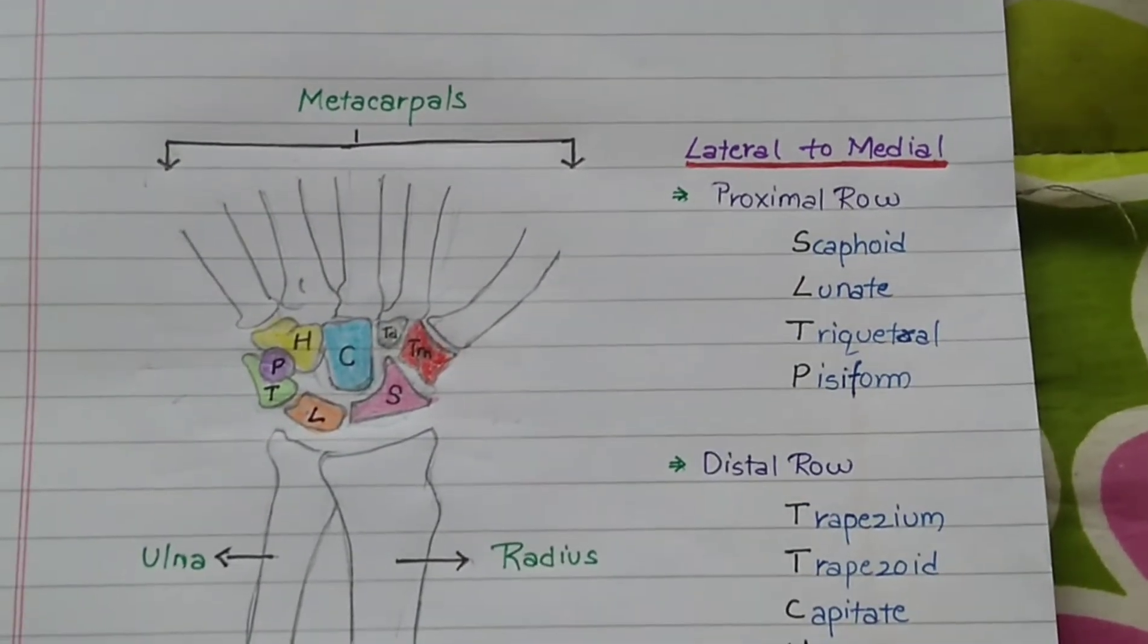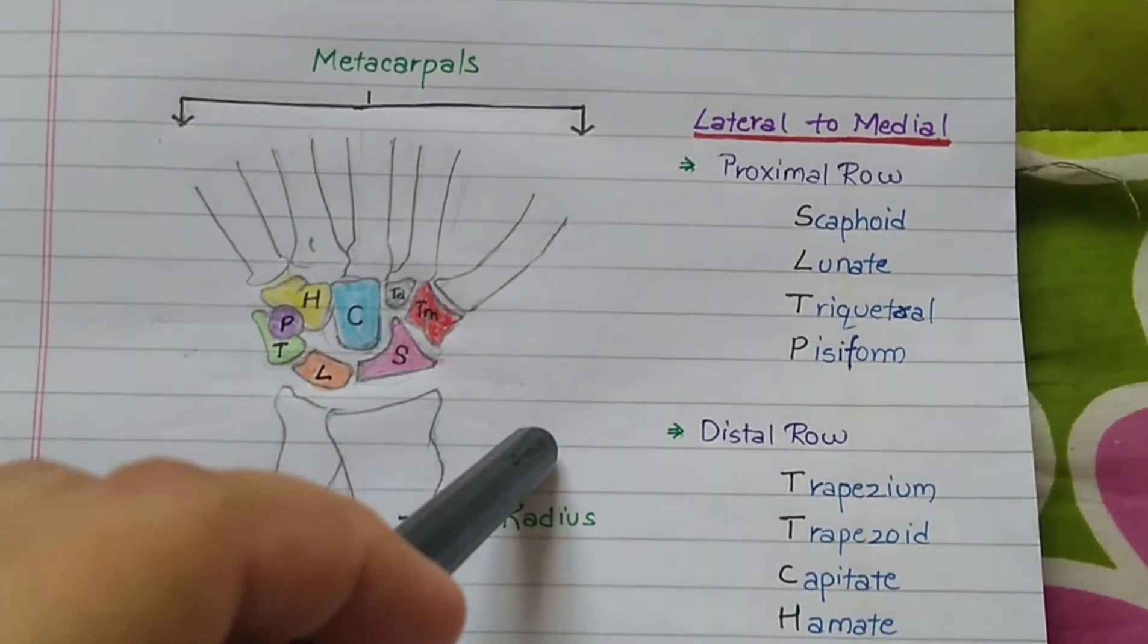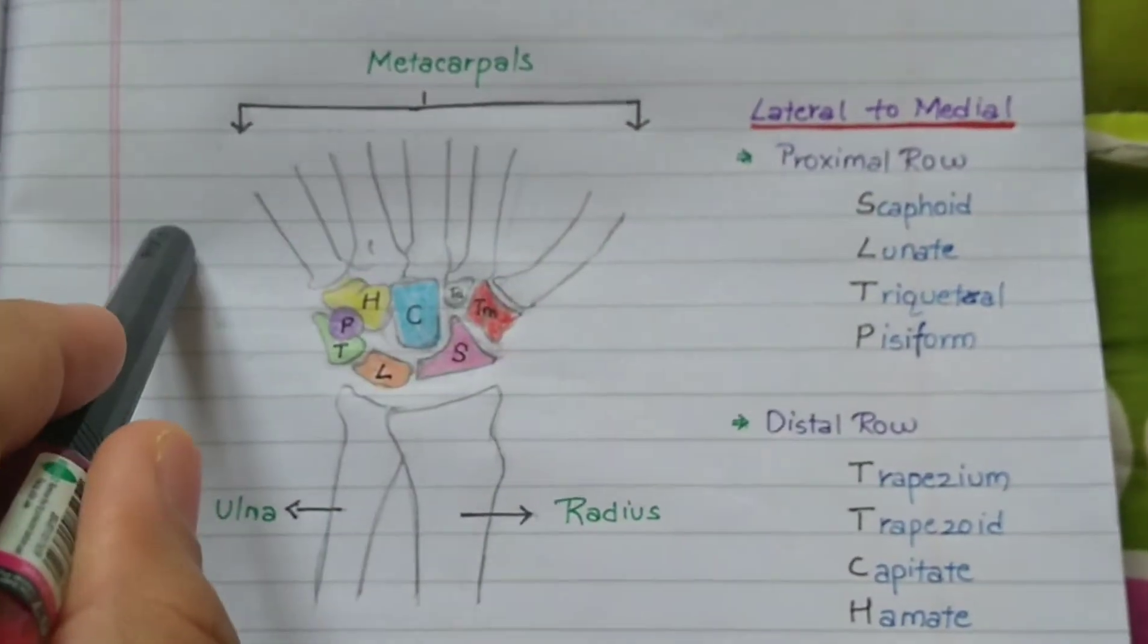Today we are going to learn about the carpal bones. The carpus is the anatomical name of the wrist which connects the radius and ulna of the forearm to the metacarpals of the hand.